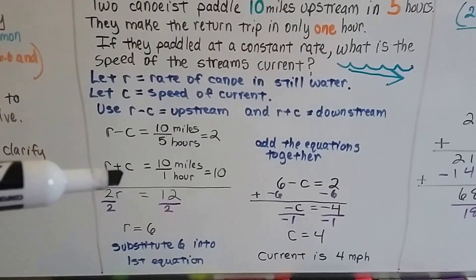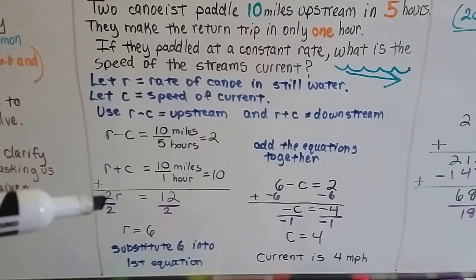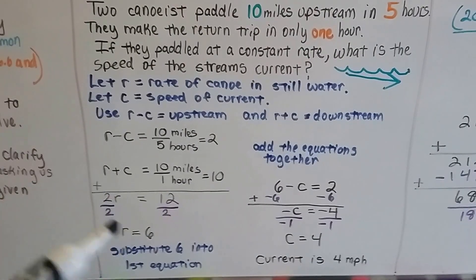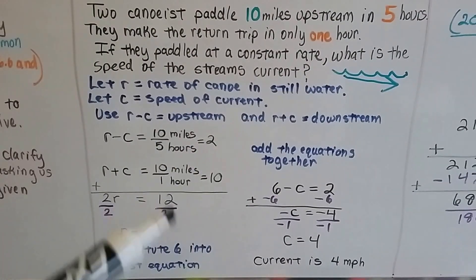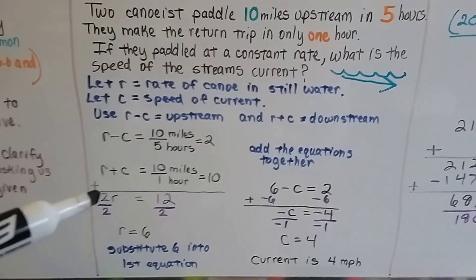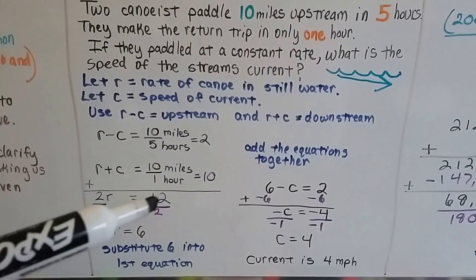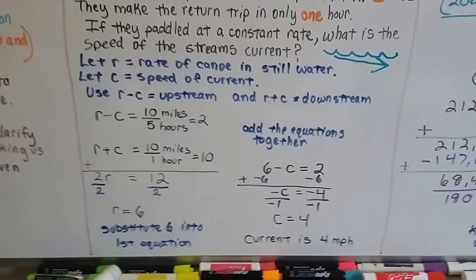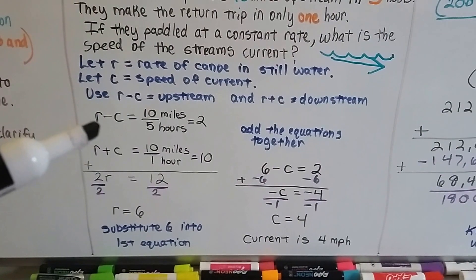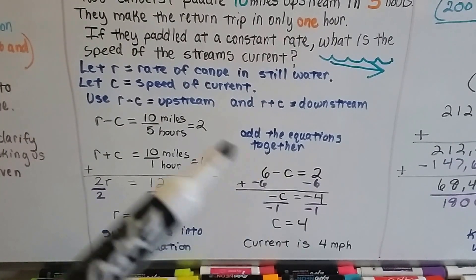We add these two together. The negatives of c and the positives of c create additive inverses as a zero pair, so we end up with just two r. And that's going to equal two plus ten, which is twelve. We divide each side of this by this two coefficient. It cancels out as a one, and we get r is equal to six. Now we can substitute this six into the first equation, and we get six minus c equals two.